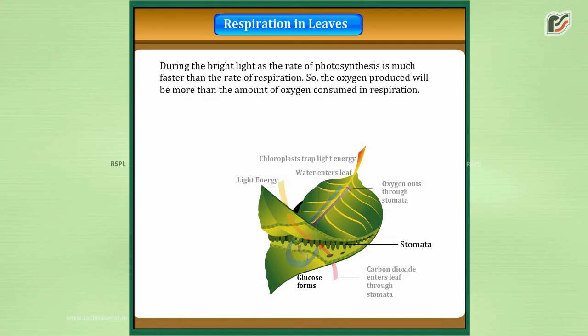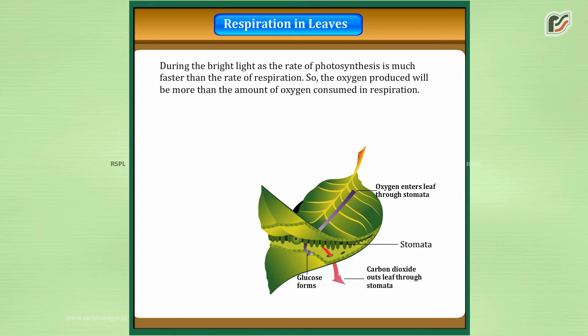During bright light, as the rate of photosynthesis is much faster than the rate of respiration, the oxygen produced will be more than the amount of oxygen consumed in respiration.